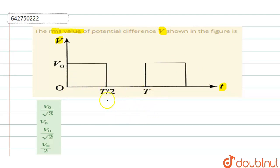Now the voltage is given - from 0 to T/2, the voltage is V₀. So you can write it as V = V₀ for 0 ≤ t ≤ T/2.